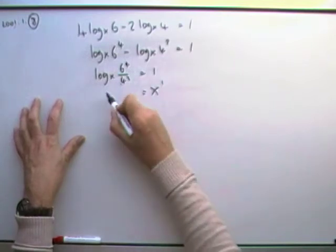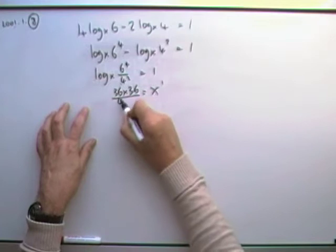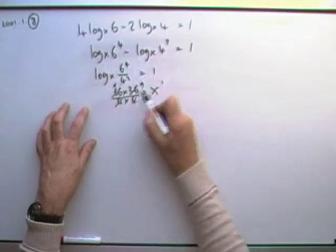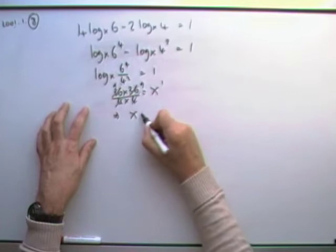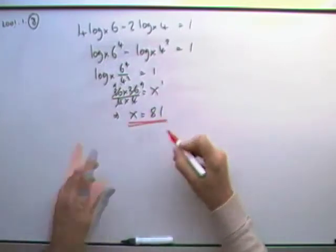Well, 6 to the 4, 6 times 6 times 6 times 6, that's 36 times 36, over 4 times 4, they both go in 9, 9 nines are 81. So very quickly, x equals 81 for that question.